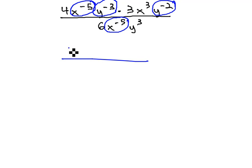When we do this, in the numerator, we have 4 times 3, x cubed, and we move the x to the negative 5th up, so it's now x to the 5th.